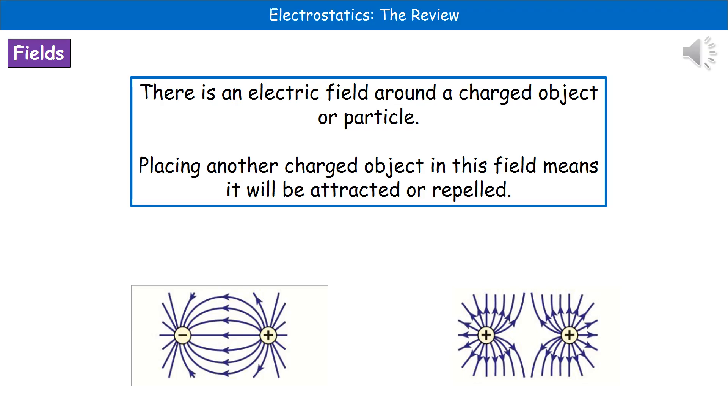This is where we go back to what we said earlier: opposite charges will attract and like charges will repel. You've got two diagrams at the bottom there. On the left-hand side, you can see they are opposite charges, therefore they're attracting. On the right-hand side, you can see they're both positively charged, therefore they're repelling as represented by those field lines.